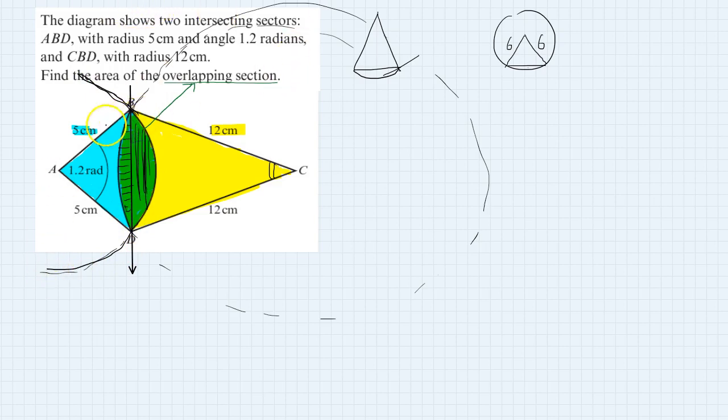What is unknown here is BD. We don't know BD and we cannot find angle C without knowing the length of BD.